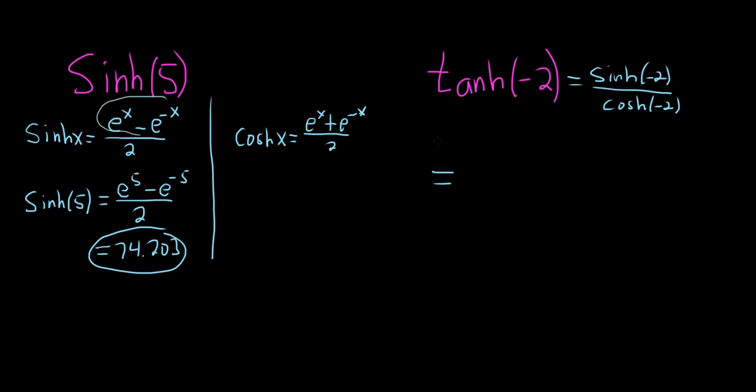So this is actually equal to e to the negative 2 minus e to the negative negative 2 over e to the negative 2 plus e to the negative negative 2. So you could type this in your calculator and get the answer. So again, for tanh, I'll write the generic formula for you. It would be e to the x minus e to the negative x over e to the x plus e to the negative x.